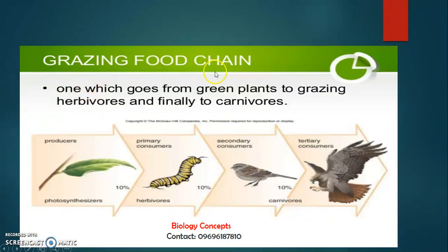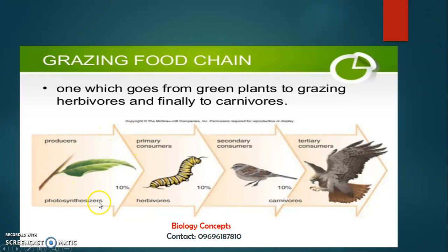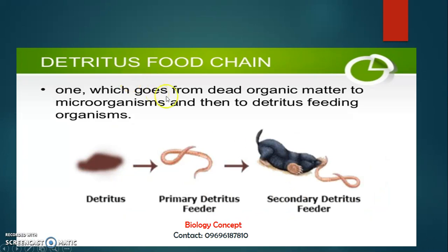The grazing food chain goes from green plants to grazing herbivores and finally to consumers — producers or autotrophs or photosynthesizers — with only 10% energy transferred to primary consumers, then 10% to secondary consumers, then 10% to tertiary. These are the herbivores and carnivores. The detritus food chain goes from dead organic matter to microorganisms and then to detritus-feeding organisms — primary detritus feeders and secondary detritus feeders.